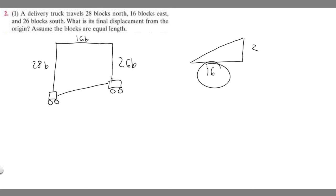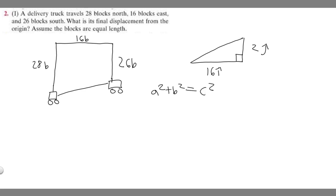When you do vectors like this, what you want to do is label the ones on the x-axis — the one that travels this way with an i, and then this one with a j. What we're trying to do is solve for this length right here. You should recognize that we can use the Pythagorean theorem: a squared plus b squared equals c squared. So this is a, this is b, and this is c. We're trying to solve for c, so we take the square root of both sides.